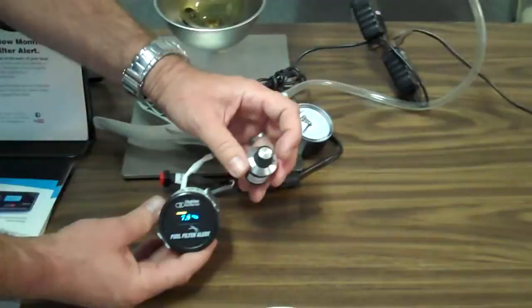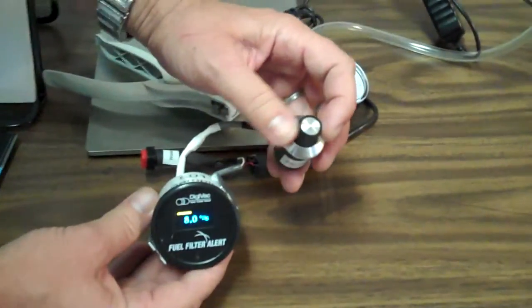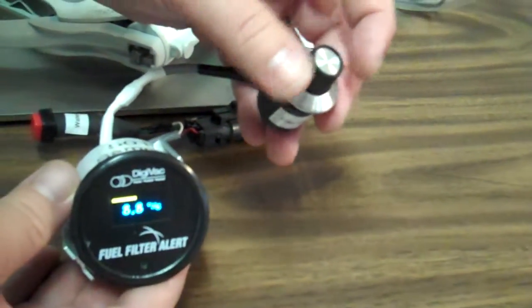Second, we have a knob that we turn to simulate vacuum. This is simulating a filter getting clogged, and we see that yellow bar increase.